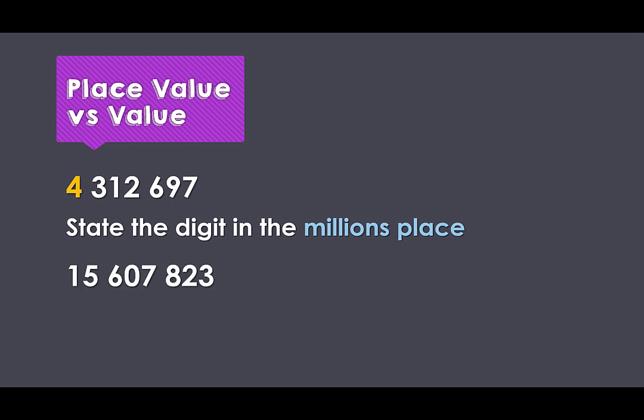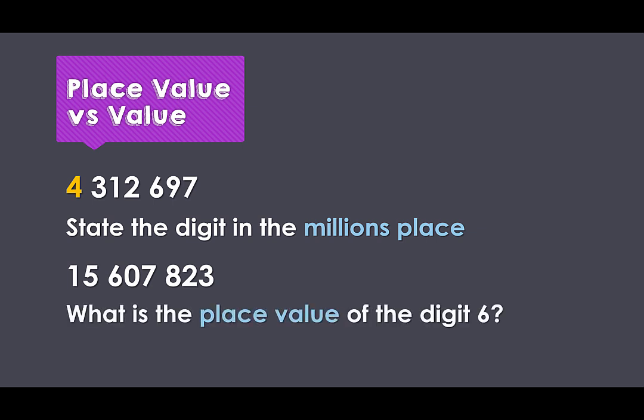Here we have another number: fifteen million, six hundred and seven thousand, eight hundred and twenty-three. What is the place value of the digit six? Here we can see the six is sitting in our second set of three digits. It's in the thousands set, and it's sitting in the hundreds position within that set. So the six is really sitting in the hundreds of thousands place value column.